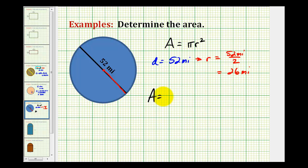So we'll have the area is equal to pi times the length of the radius squared, which would be 26 miles, and I'll leave off the units until the end. So this would be pi times 26 times 26. And we can express the area two ways.